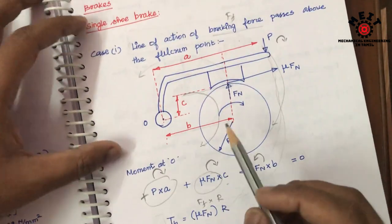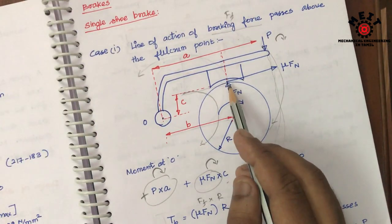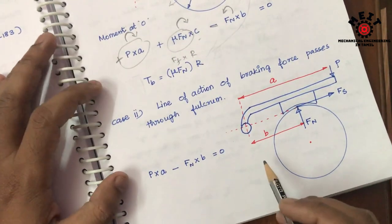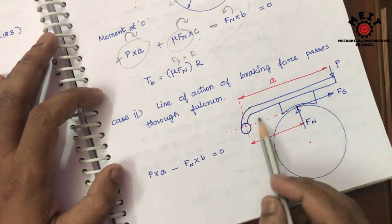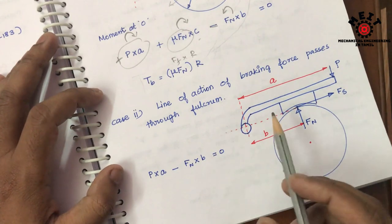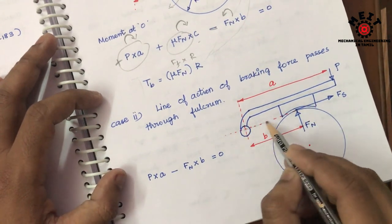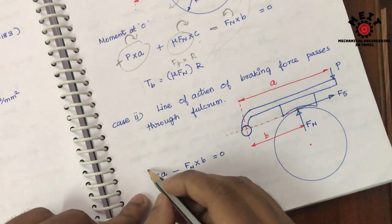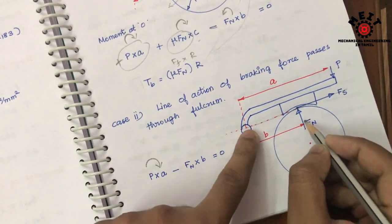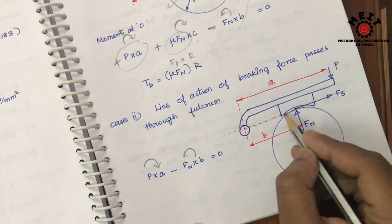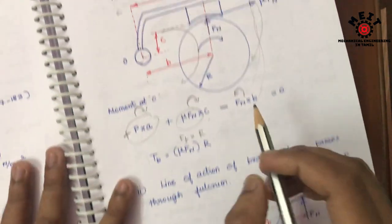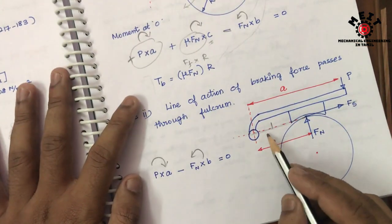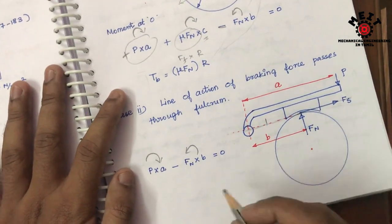So that is Case 1, where the frictional force line of action passes just above the fulcrum point. Second case: the frictional force passes through the fulcrum point. In this case, the moment of frictional force has no moment arm — the distance C is zero. So the equation is: P into A clockwise, minus F1 into B anti-clockwise, plus F_f into zero.